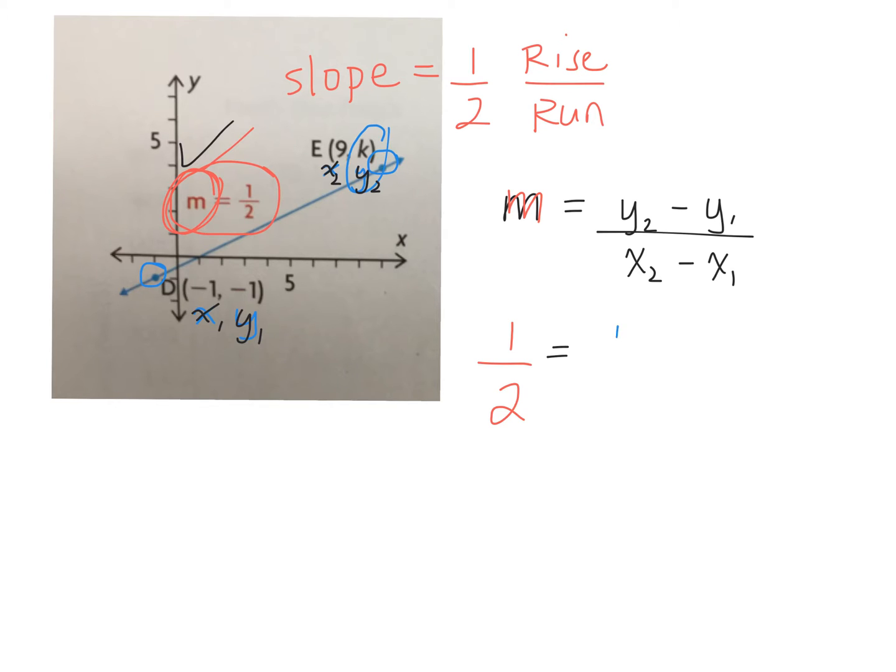Okay, and that's Y2, take away, what did we label as Y1? Y1, what's Y1? Good. So the formula is Y2 take away Y1 over, what's X2? Nine. Take away X1, what's X1? Negative 1.